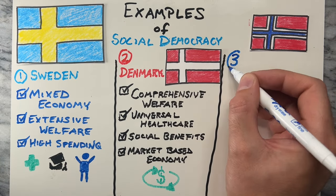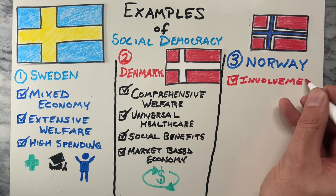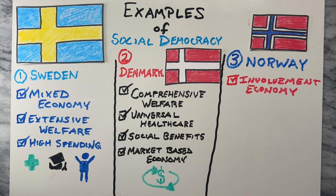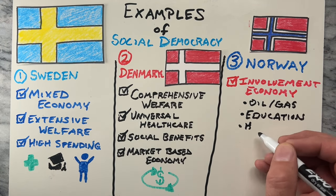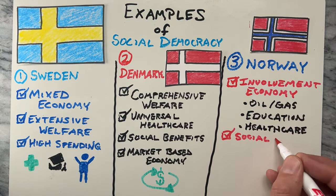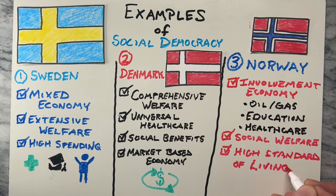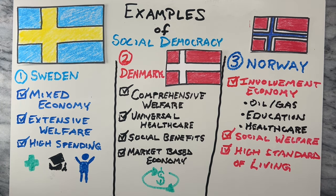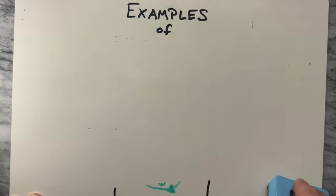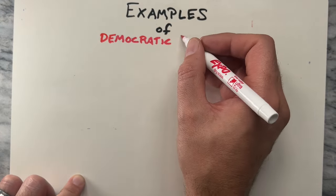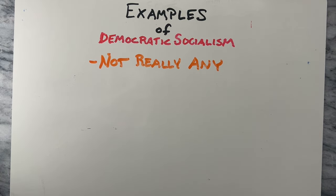Norway is often included in the list of social democracies due to its significant state involvement in various sectors of the economy, including oil and gas, education, and health care. The country prioritizes social welfare and maintains a high standard of living for its citizens. When we look at democratic socialism examples, there aren't really any countries that fit the definition exactly.